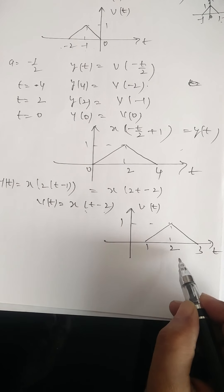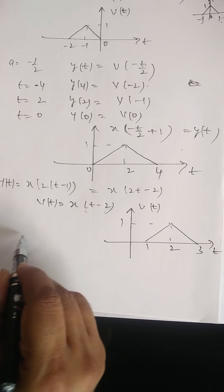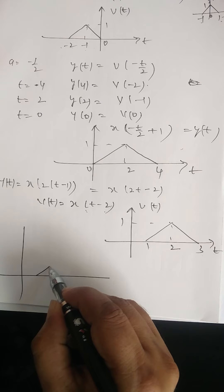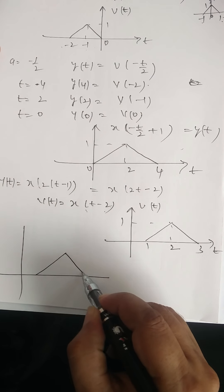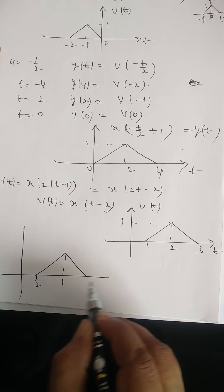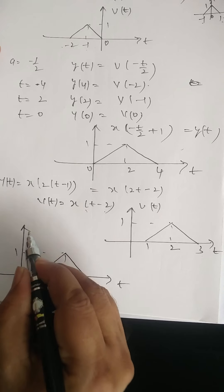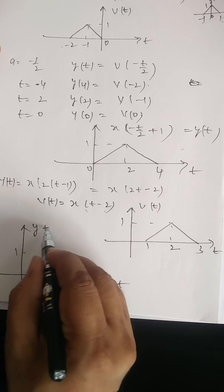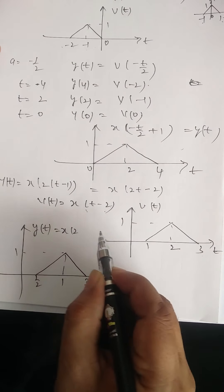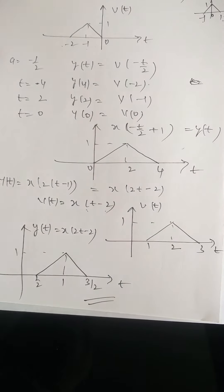So the output y of t exists from 1 by 2 to 3 by 2, that is from 0.5 to 1.5. This is the output y of t, which is x of 2t minus 2. This completes all the problems. Thank you.